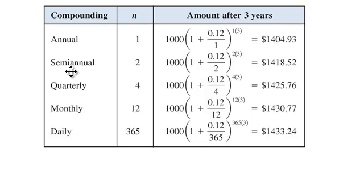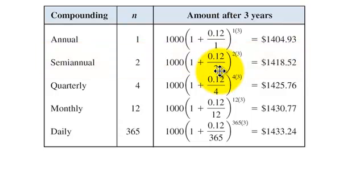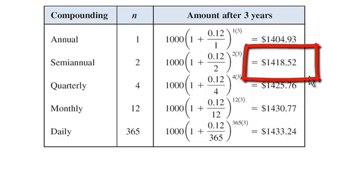And then to work out the other questions in this problem, they ask for semi-annual. That means my N will be 2. So I typed in 1,000 times 1 plus 0.12 divided by 2, and raise that to the 2 times 3, which is 6. Practice that in your calculator. You should get 1,418 dollars and 52 cents.